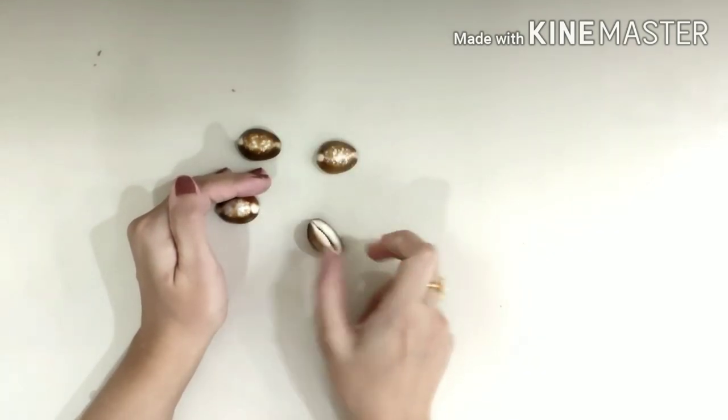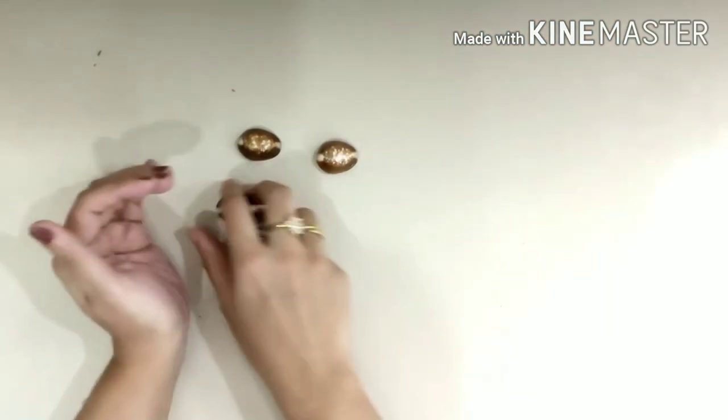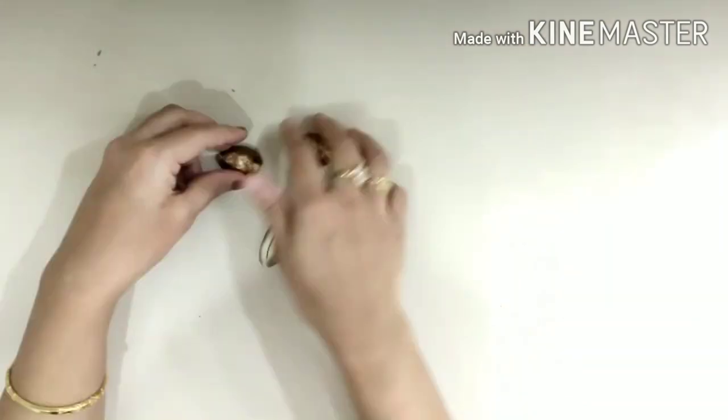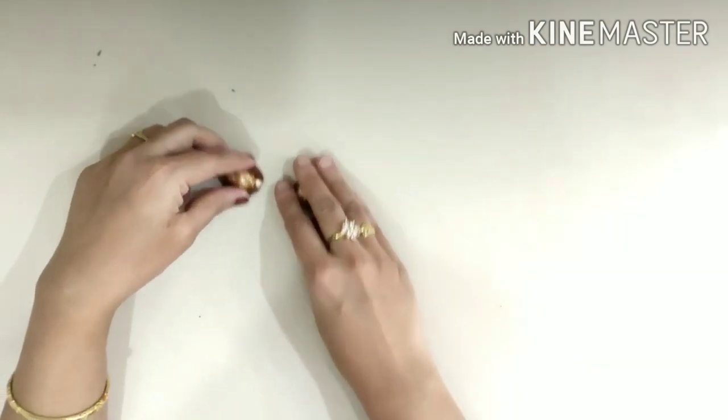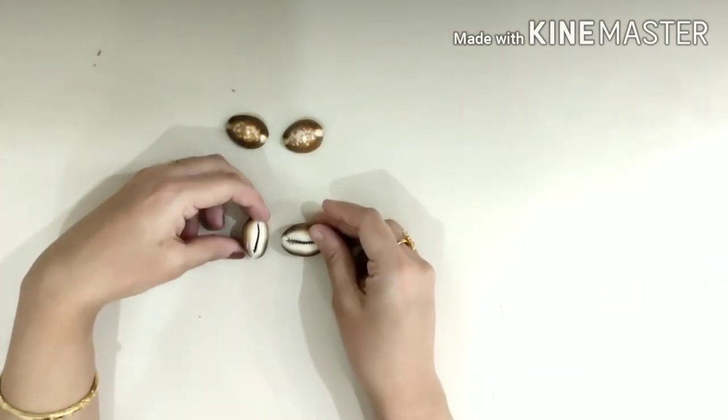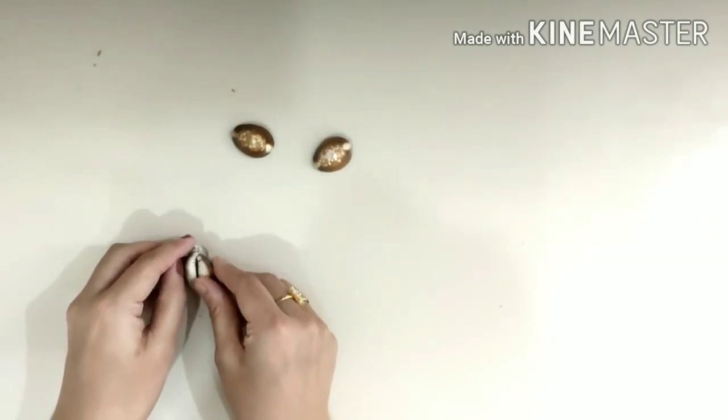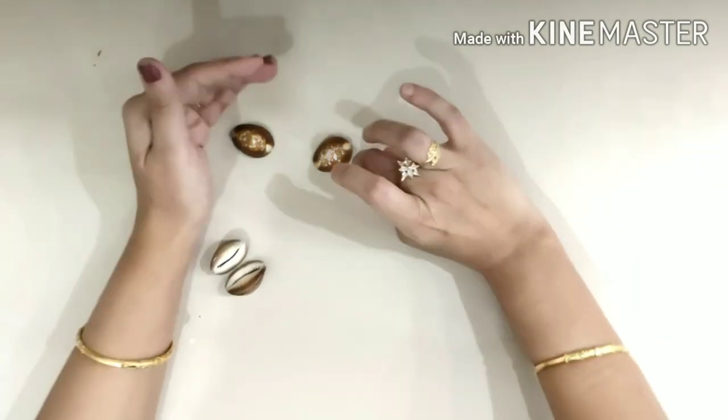This is one count. If two coins are open and two coins are closed, this is not taken as a count. You have to keep it like this and hit it like a carrom board coin. This is only one count.